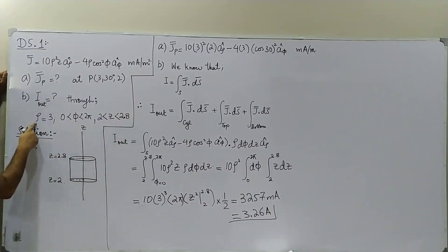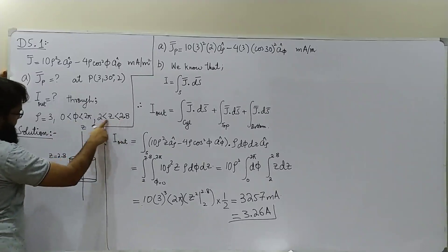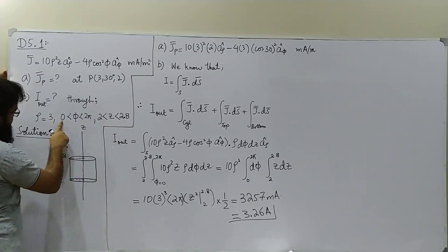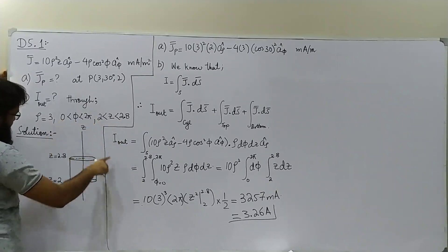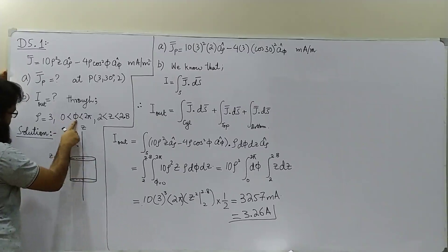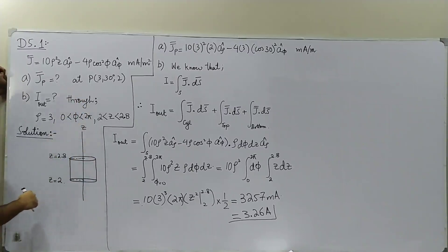Let's first discuss what this region would look like. This region is definitely a cylinder whose radius is 3, whose top is at 2.8, whose bottom is at 2, and we are considering the whole cylinder, not a truncated one, because the values of phi are from zero to 2π. Now we are asked to find total current which is coming out of this circular band if J is this.